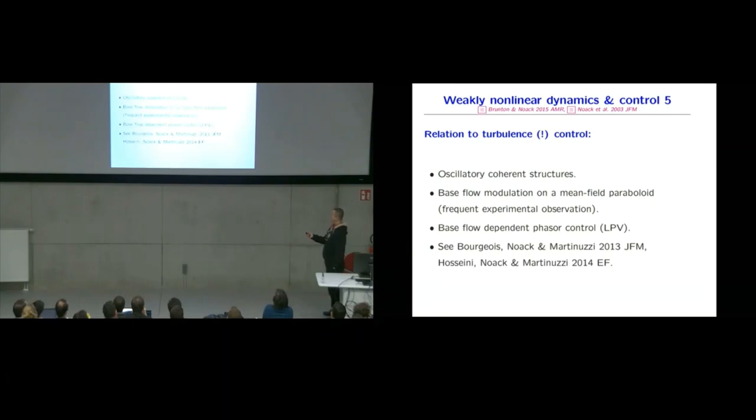Well, there are oscillatory coherent structures. The base flow modulation on the mean field have been frequently experimentally observed. And what we found in our collaborative research center for flow control, if you don't take into account the base flow variation, then your control may not work. So this is a critical enabler for control, and which is also increasingly realized in JFM publications. And we also can identify the mean field paraboloid from experimental data from turbulent flows where you would not initially expect them.